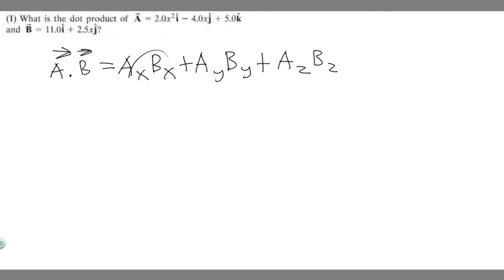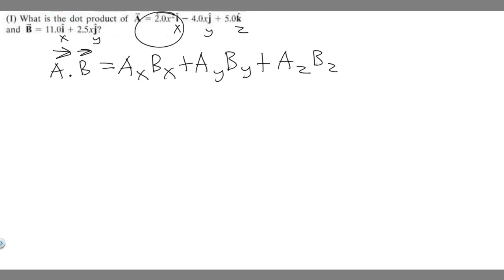So what is A sub x, B sub x, and what are all these? Essentially, you see we have the i, j, and k here, and what these represent are the x, y, and z axes. So i is the x, j is the y, and k is the z. The numbers out front are your components — so 2x squared is your A sub x, and A sub y is going to be the thing in front of the j, which is minus 4x. They don't give us a z component in the second vector, so we're just going to put zero for that.